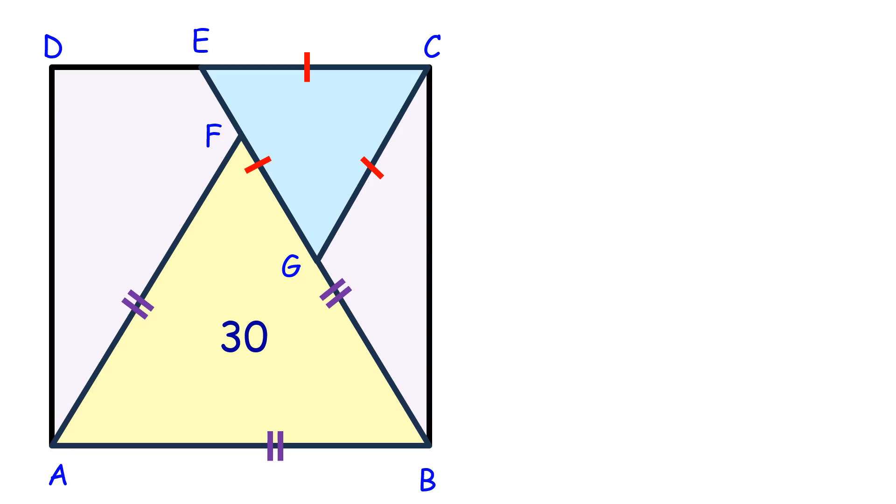In this problem, ABCD is a square with two equilateral triangles inside it. The area of one triangle is 30 square centimeters. Using this data, we have to find the area of the blue equilateral triangle. Let's see the solution.